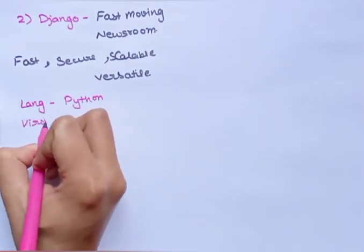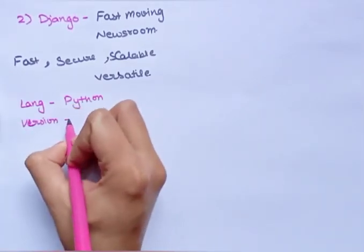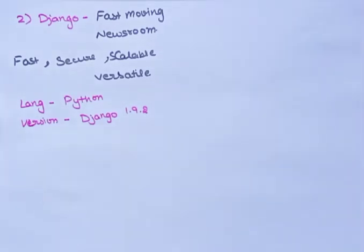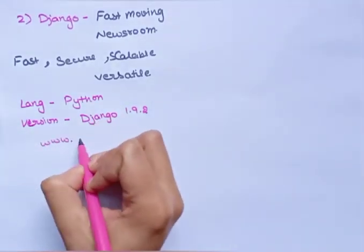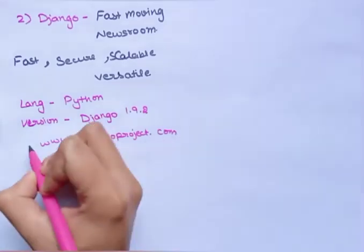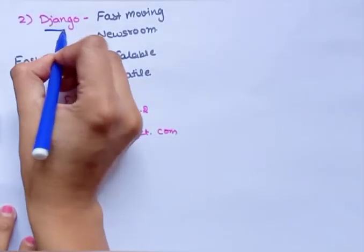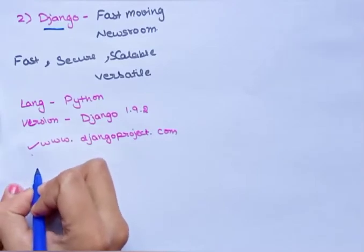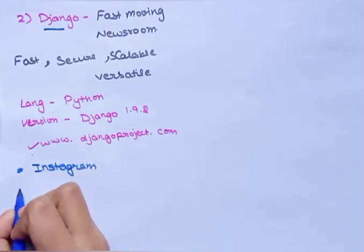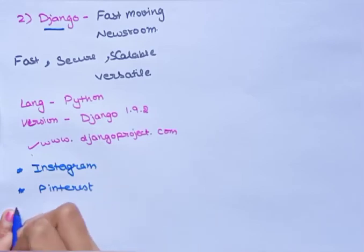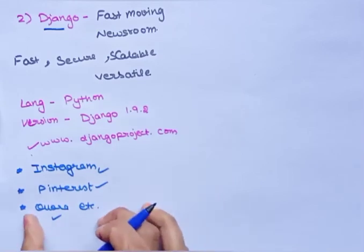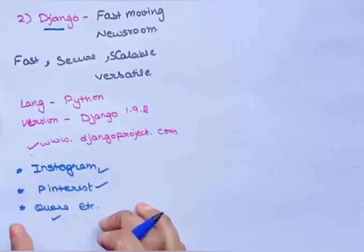The language used in Django is Python. Its latest version is Django 1.9.2. You can get this framework from www.djangoproject.com. Websites that use Django include Instagram, Pinterest, and Quora — all very commonly used and famous web applications.